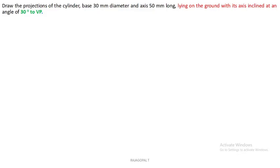In the previous video we discussed the same solid cylinder but axis is inclined to HP. In this, what is the difference from the previous case? Here the axis is inclined to VP.